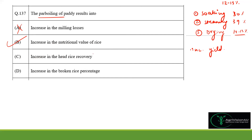Option C — increase in head rice recovery — is correct because yield percentage increases on parboiling. Head rice refers to complete, unbroken grains. Option D — increase in broken rice percentage — is wrong because parboiling increases yield for head rice recovery, so broken rice percentage would decrease. Therefore options B and C are the right answers for this MSQ question.